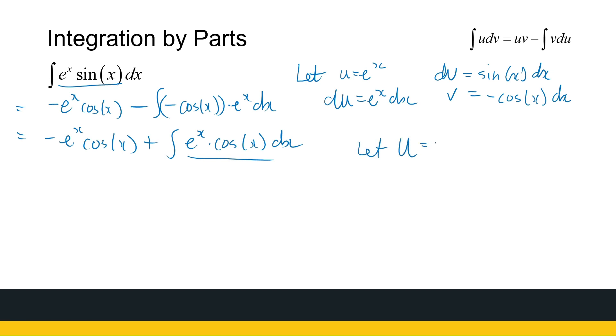Let capital U be equal to e to the power x again and dV be equal to cos x dx. Then du is equal to e to the power x dx and v is sine x. Then that portion becomes minus e to the power x cos x, stays the same, plus u times v, so it's e to the power x sine x minus the integral of v du, which is e to the power x sine x dx.